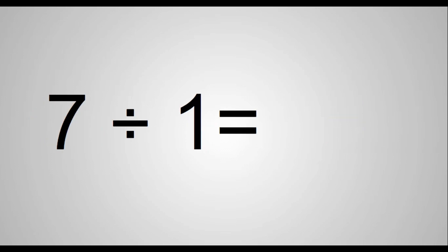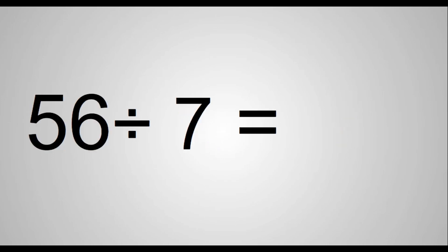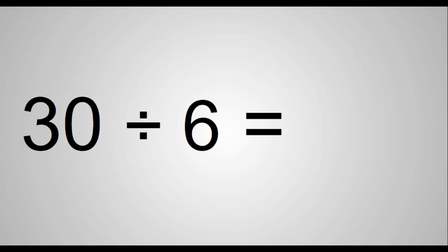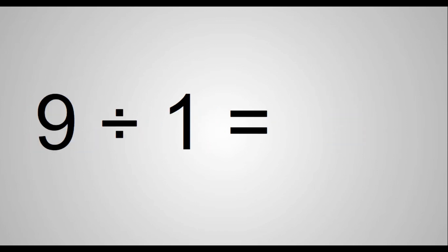57 divided by 8 equals 6. 56 divided by 7 equals 7.